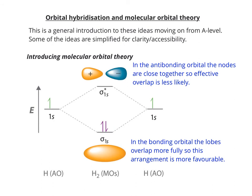Looking at a slightly different way of representing the hydrogen molecule: in the bonding orbital, the lobes overlap more fully, so this arrangement is better — it's more favourable and more energetically stable. In the antibonding orbital, the nodes are closer together, so effective overlap is less likely.